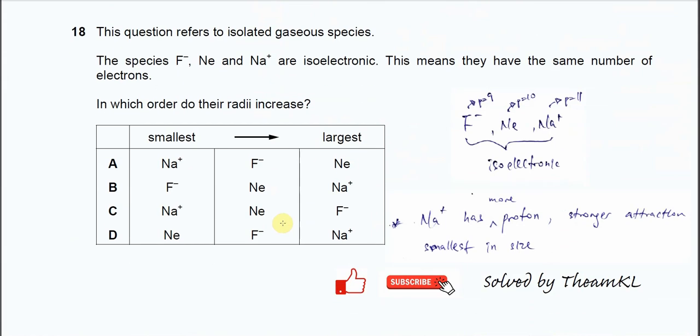Question 18. The species like fluoride, neon, and sodium ion are isoelectronic. Isoelectronic means they have the same electron configuration or electron number. In which order do these radii increase?